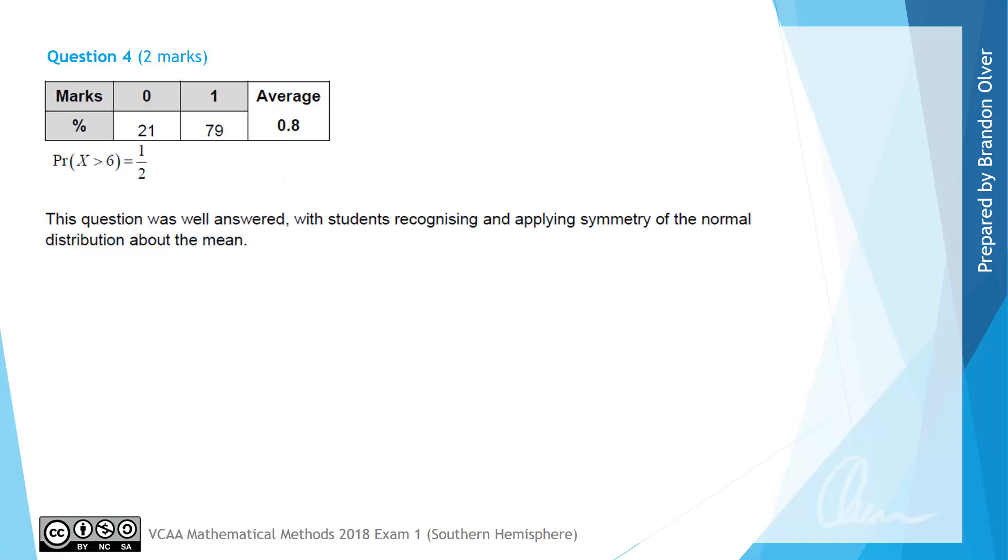From the examiner's report we can see that almost 80% of students got this question correct, and the examiner says that it was well answered with students mostly recognizing and applying the symmetry property of the normal distribution about the mean, meaning that half the probability is above it and half is below the mean.